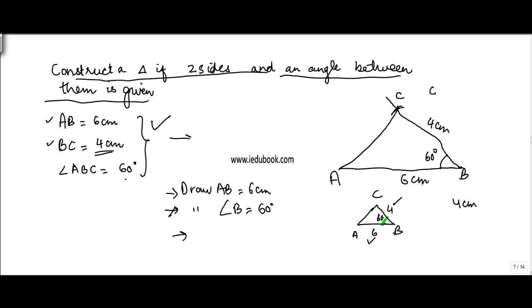Now a variation, a small variation for this is, you could be given this and you would be told find AC. If that be the case, what you need to do is once you've constructed and joined this through a straight line, you just measure the length of this using your ruler. And whatever is the distance between them will be the length of AC.